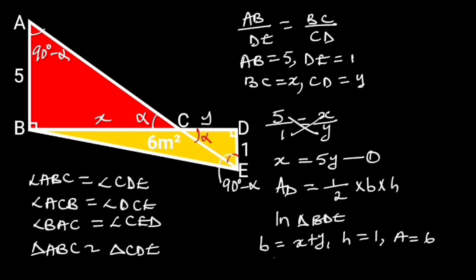If we plug in these values in the above formula, we will have 6 is equal to 1 over 2 times X plus Y times 1. By cross multiplication, we will have X plus Y is equal to 2 times 6. 2 times 6 is equal to 12. So, X plus Y is equal to 12.